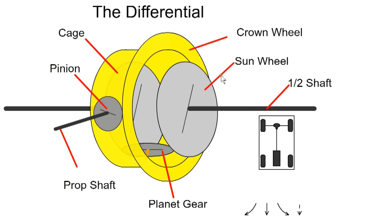With an open differential, the half shaft has the wheel attached at one end and the sun gear at the other. The sun gears are meshed with a planet gear which can rotate around the sun gear. Normally there are two planet gears, but we only show one for clarity.